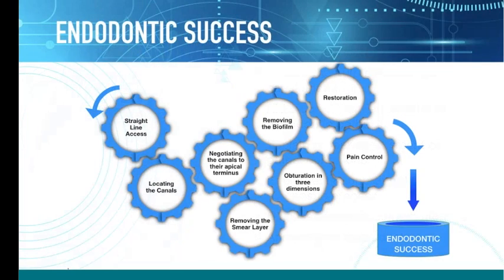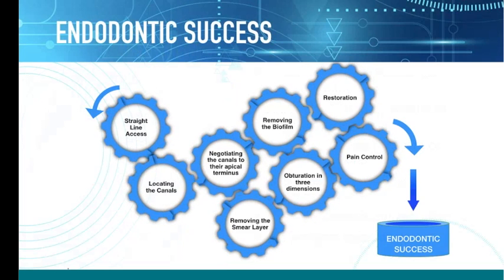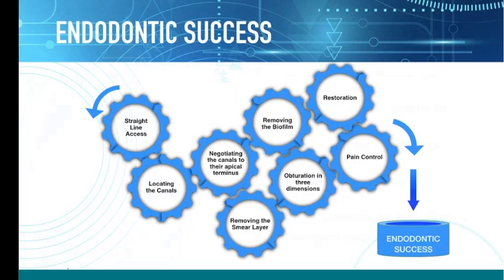With endodontics, like any aspect of dentistry, there are a lot of moving parts. First, you've got to provide yourself with straight line access. Once we do that, we've got to find all the canals and orifices. We need to negotiate the root canals to their individual apical termini. Then we want to remove the smear layer — that inorganic layer created on the root canal wall during instrumentation — and of course remove the biofilm, which is the mucopolysaccharide matrix in which bacteria are hiding. Once done, we seal off that root canal system and restore the tooth back to function.